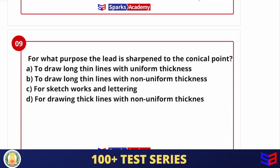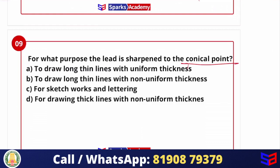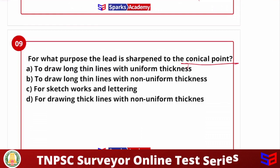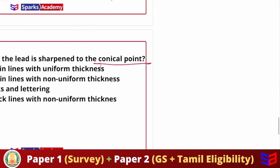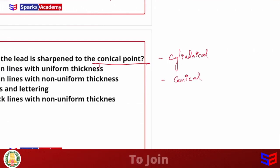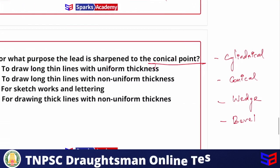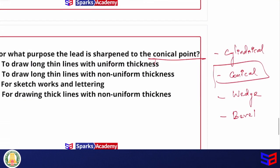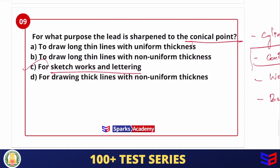Next question: for what purpose is the lead sharpened to a conical point? Options are: to draw long thin lines with uniform thickness, non-uniform thickness, for sketch work and lettering, or for drawing thick lines. The conical shape is mainly used for sketch work and lettering. So the answer is C — sketch work and lettering.